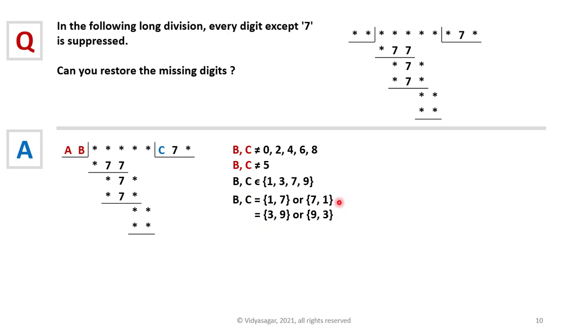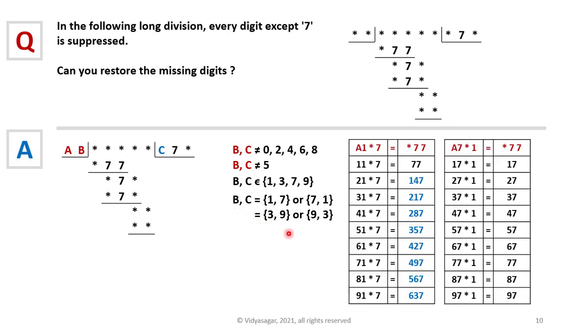Let's take the first two combinations, 1-7 and 7-1, and list out all possible multiplication results for AB times C. You can see from these multiplication results that none of them are resulting in a three-digit number ending with 77. We have a two-digit number ending with 77, but what we need is a three-digit number. So B and C cannot be either 17 or 71.